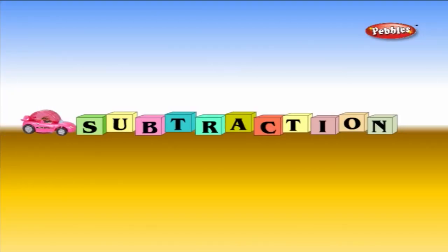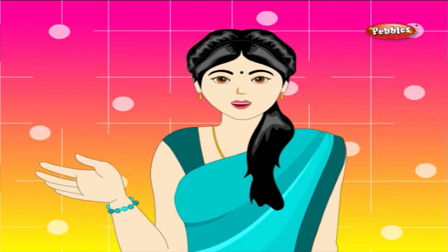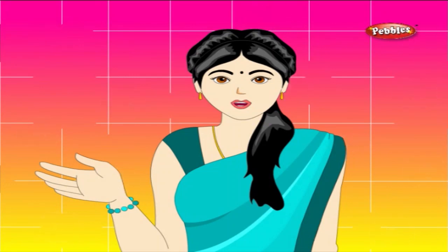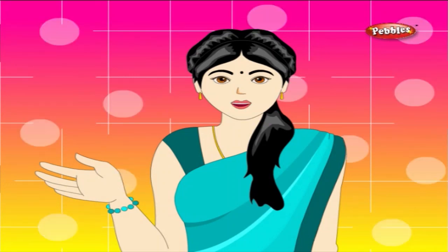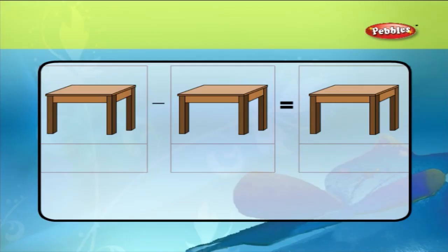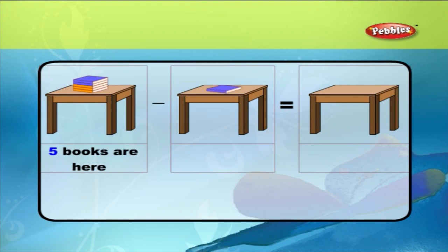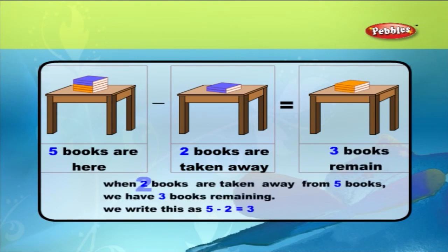Subtraction. Subtraction means taking away. We use the symbol minus for showing subtraction. There are five books on a table. When you remove two books, the balance books on the table is three. When two books are taken away from five books, we have three books remaining. We write this as five minus two is equal to three.